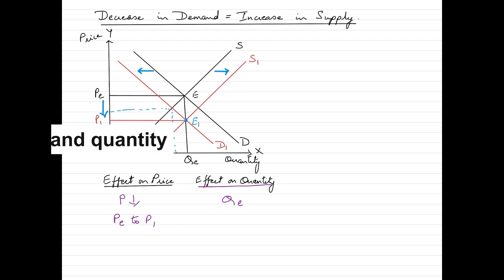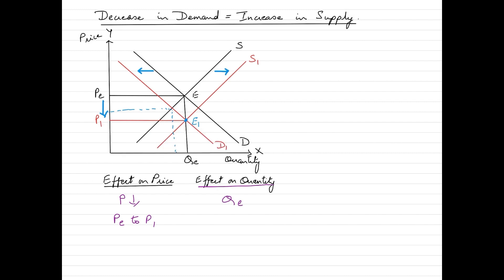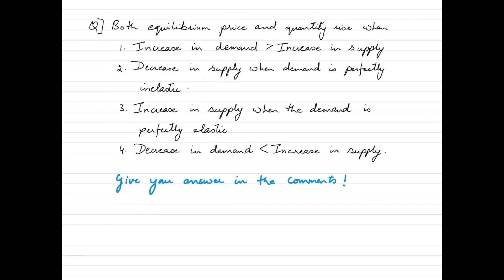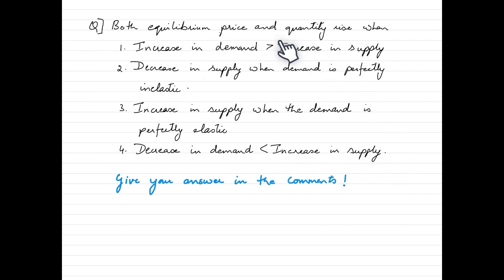The effects on price and quantity greatly depend upon the magnitude of the change. Before looking at each scenario, here's a question: which of the following causes both equilibrium price and quantity to rise? The options are: an increase in demand greater than an increase in supply; a decrease in supply when demand is perfectly inelastic; an increase in supply when demand is perfectly elastic; or a decrease in demand smaller than the increase in supply. Leave your answers in the comments.